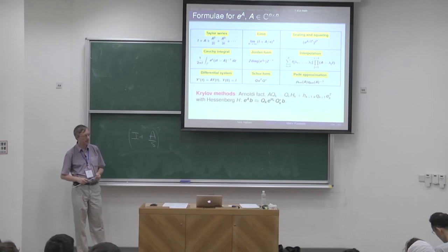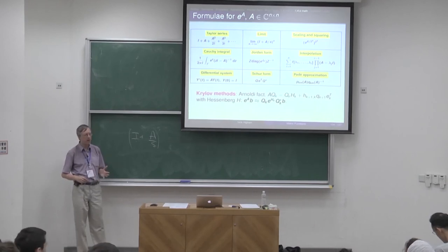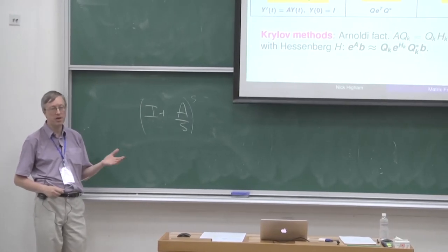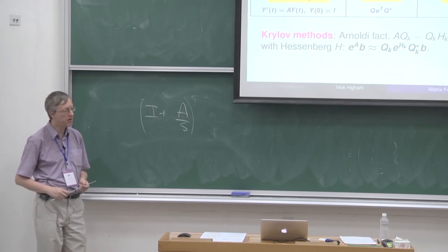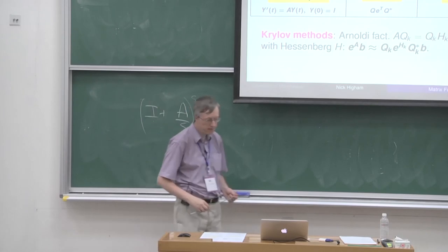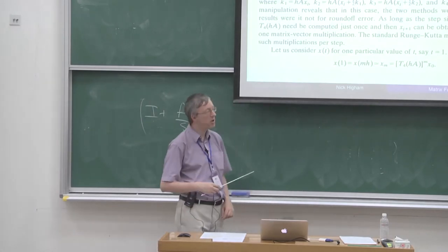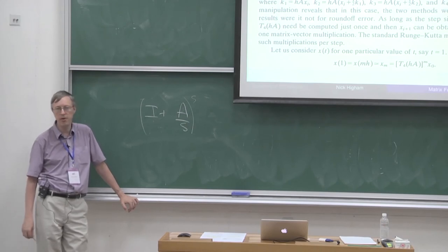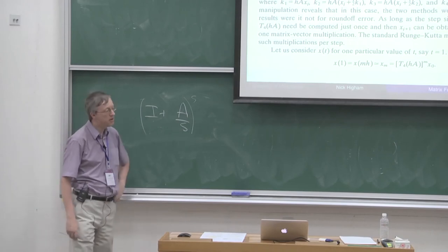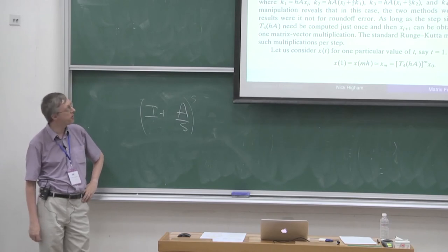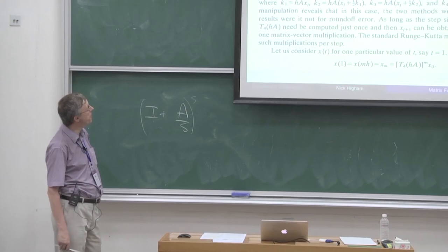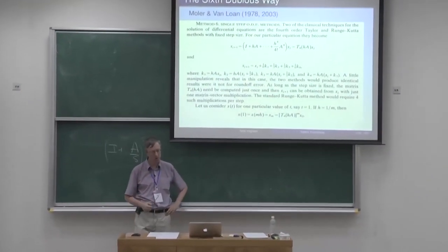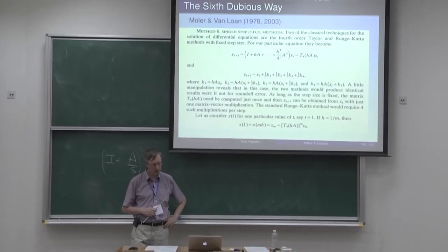Someone mentioned to me earlier this week the classic paper by Moler and Van Loan called '19 Dubious Ways to Compute the Matrix Exponential' — I'd strongly recommend reading it. The first version was in 1978 and they published a revised update in 2003, both in SIAM Review. The original paper had 19 different classes of method and did a comparison — pros and cons, often with analysis. It's a really nicely written paper and a great read. The title has been quite influential — a good example of why choosing a good title for your paper matters.